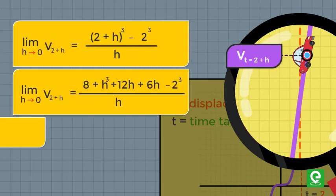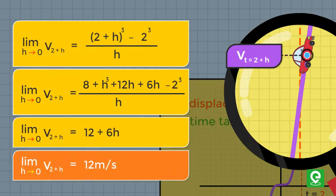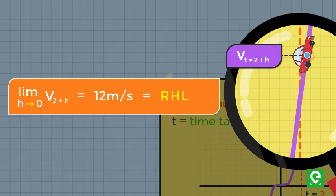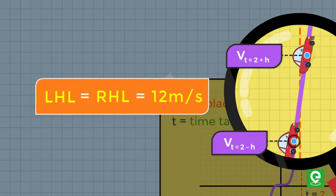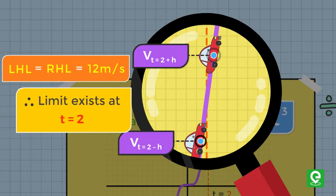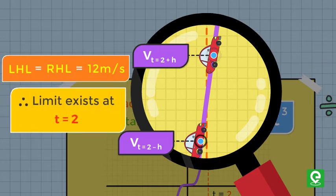Similarly, the instantaneous velocity at t just greater than 2 can be calculated. This limit is known as the right-hand limit. Since LHL is equal to RHL and is finite, we can be sure of its existence at t = 2. So we can say that limit at t = 2 exists and the instantaneous velocity is 12 meters per second.